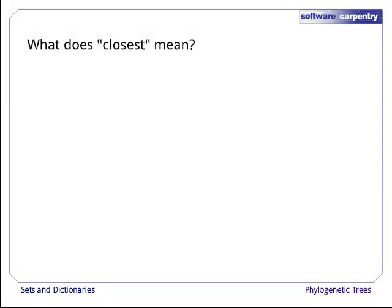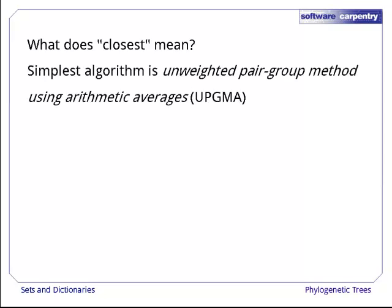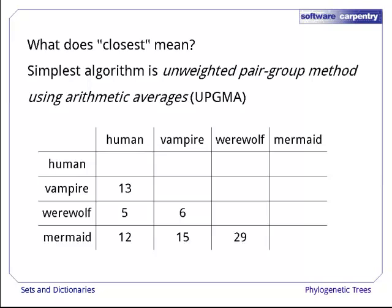Now, what does closest mean? One simple algorithm is called unweighted pair group method using arithmetic averages. Let's illustrate it by calculating a phylogenetic tree for humans, vampires, werewolves, and mermaids.